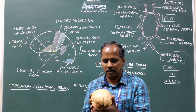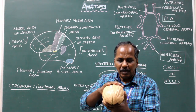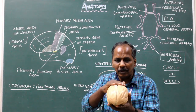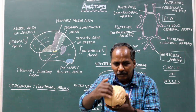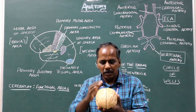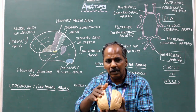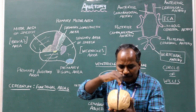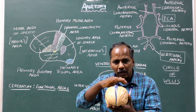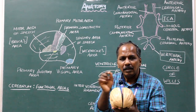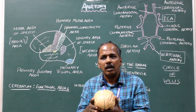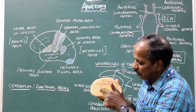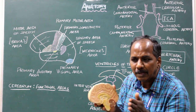The cerebrum consists of two cerebral hemispheres separated in the midline by a gap or fissure known as the median longitudinal fissure. In the depth of the median longitudinal fissure, the two cerebral hemispheres are connected by commissural fibers known as the corpus callosum.